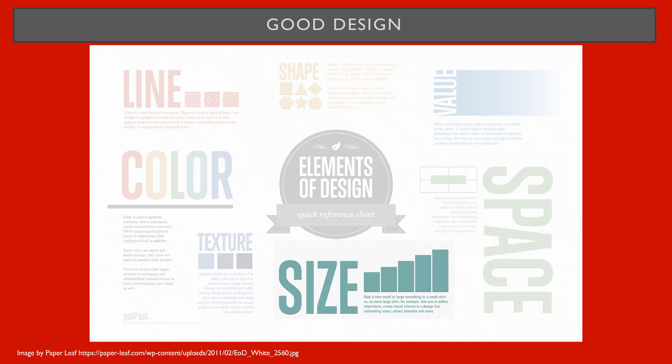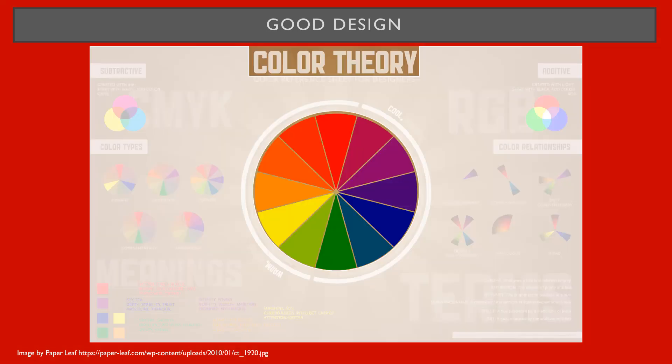Size is a good way to create distinction between content. The use of color can make or break a poster. For a poster, a color scheme of two to three colors works well. In addition to primary and secondary colors, consider tertiary colors.